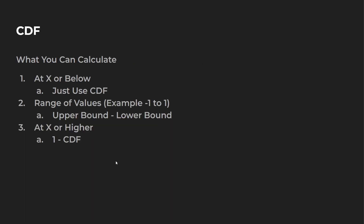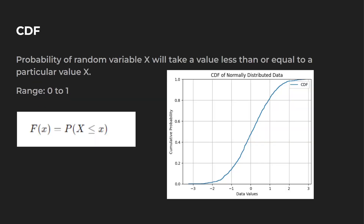So what we can do with our CDF: we can find a value at X or below using the CDF directly. We can also find a range of values — for example, negative 1 to 1. To find values from negative 1 to 1, all we do is take our CDF value at 1 and subtract our CDF value at negative 1, and that gives us that inner range.